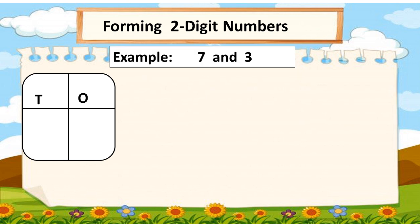Now, let's replace the places of numbers. And we take seven as tens and three as ones. So, this number is seventy-three.